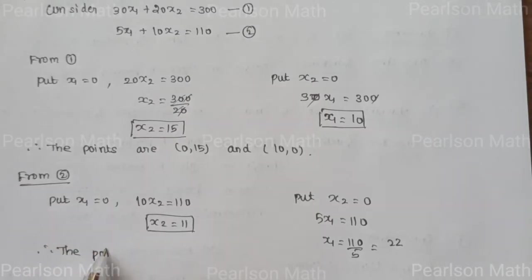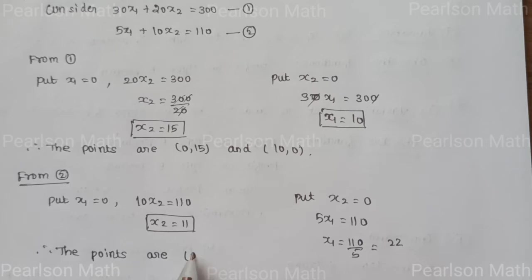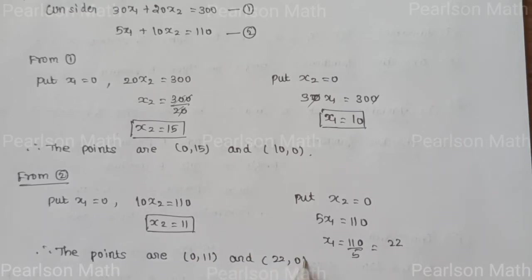Put x₂ equals 0. Now 5x₁ equals 110, so x₁ equals 22. Therefore, the points are (0, 11) and (22, 0).